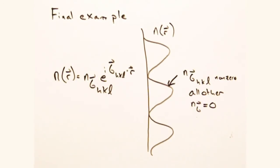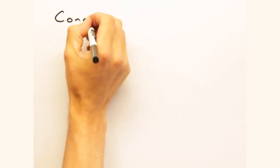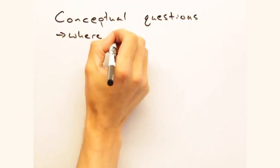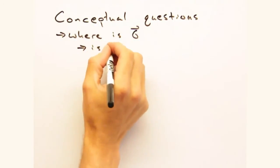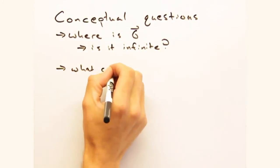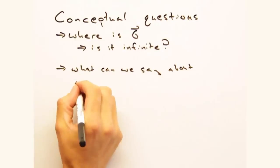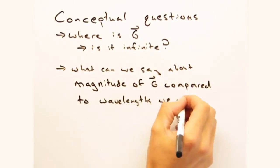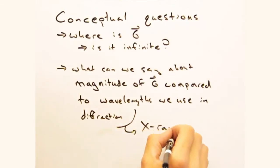We leave you today with some conceptual questions regarding Fourier space. First off, where does the space spanned by g exist, and is it infinite? Why or why not? It might help to think about its units. And second, because we've been talking about diffraction, what can we say about the magnitude of g compared to the wavelength that we diffract in our sample?